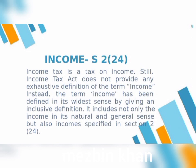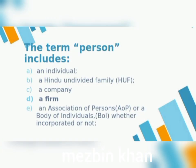Next is the term person. What comes under person? Person includes: individual, Hindu Undivided Family, company, firm, association of persons, and body of individuals — whether they are incorporated or not. There is no difference between them; all of them are included in the definition of person.